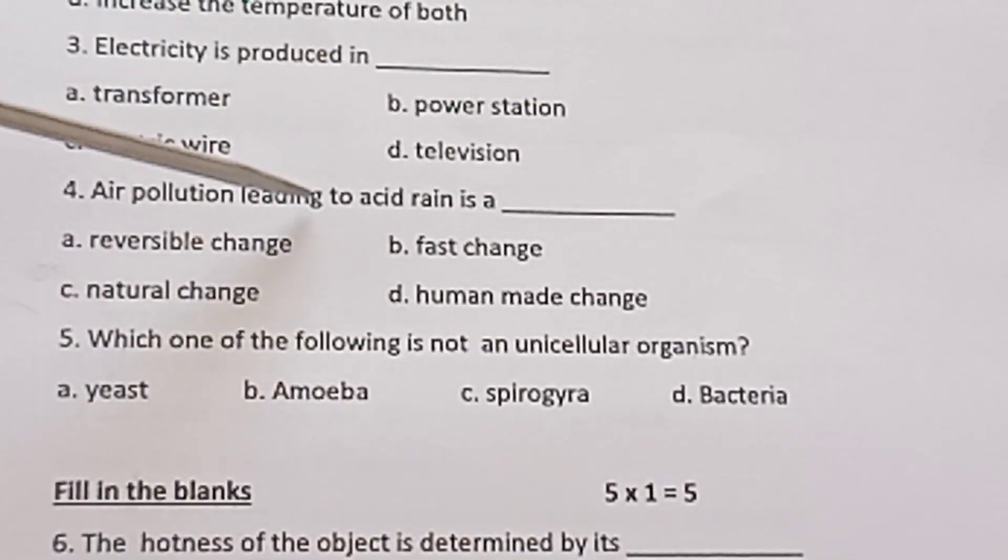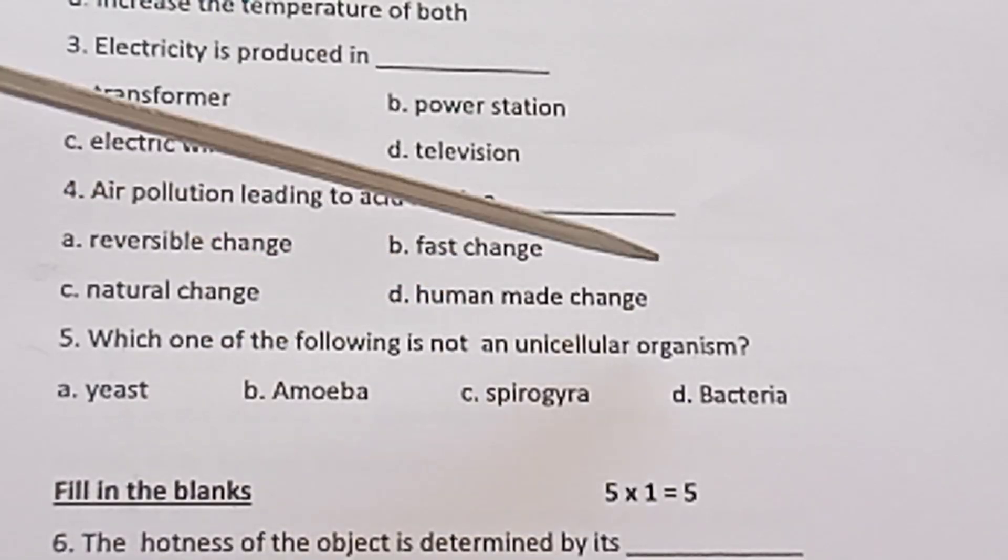Question 4: Air pollution leading to acid rain is a: a) reversible change, b) fast change, c) natural change, d) human-made change.